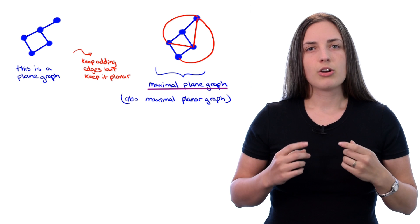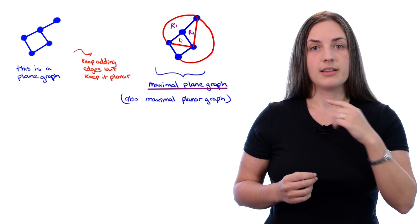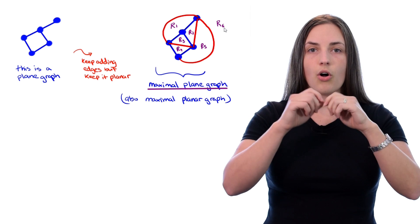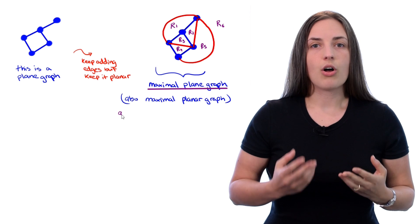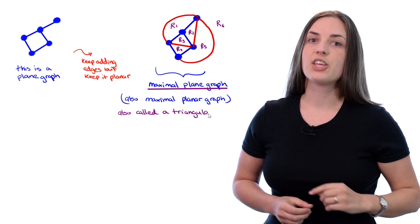Furthermore, if you look at any of the regions in this graph, you'll see that all of their boundaries are triangles, even the exterior region. So this is also sometimes called a triangulation.